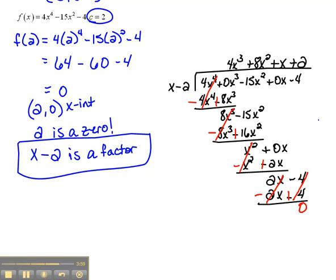And we have a 0 remainder, which shows that these double check each other. If we evaluate the function at the zero, we get a y value of 0. If we take the factor and divide, it should go in evenly with no remainder. So now we can write that original function as the factors x minus 2 times 4x cubed plus 8x squared plus x plus 2. That is our function in factored form.